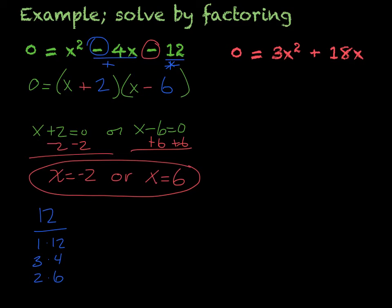In this next example, I have 0 = 3x² + 18x. So the first thing I'm going to do is look, what do they both have in common? So in each of these terms, there is an x, but there is also a factor of 3. So I can factor out a 3x.